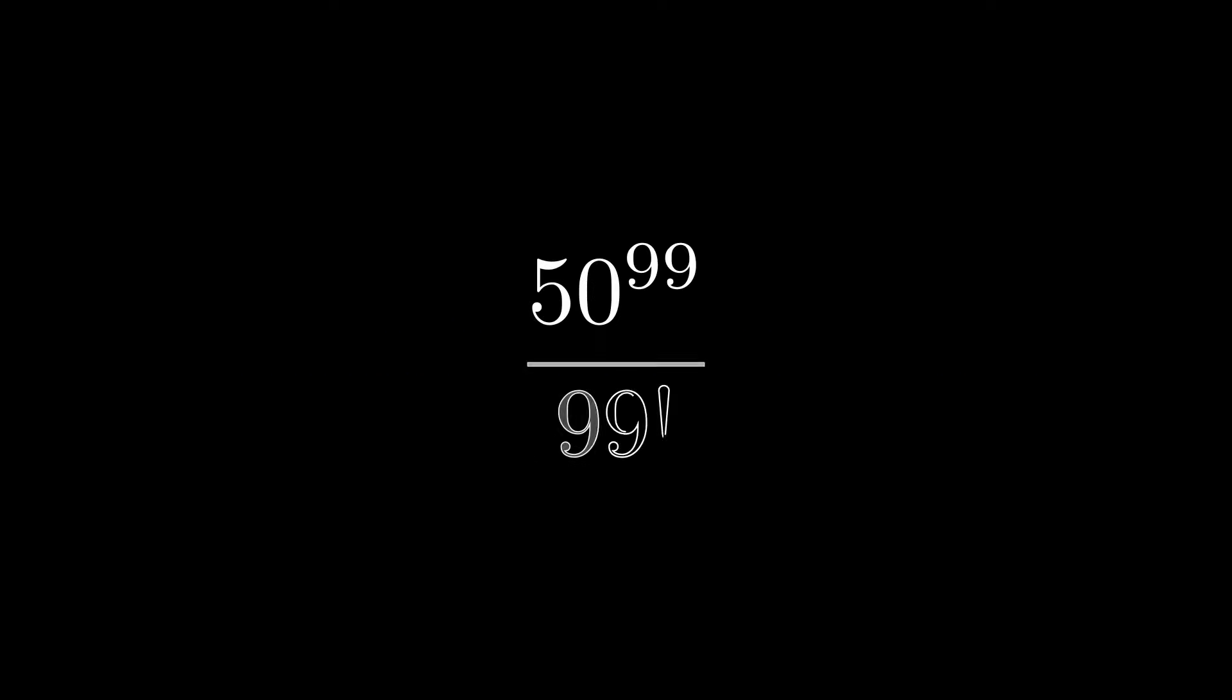So let's write down the ratio: 50 to the 99th in the numerator, 99 factorial in the denominator. If this ratio is greater than 1, then the top is bigger. If it's less than 1, the bottom is bigger. Simple as that.